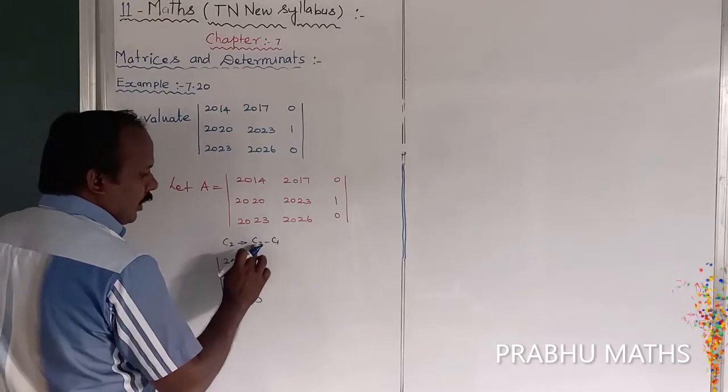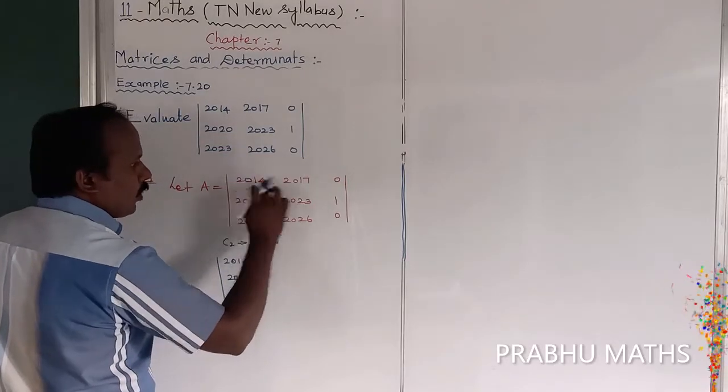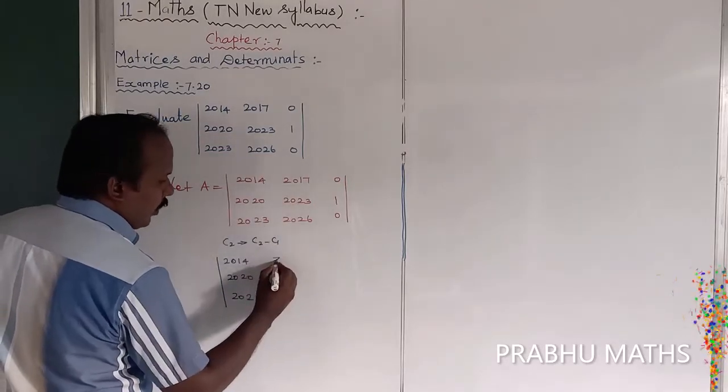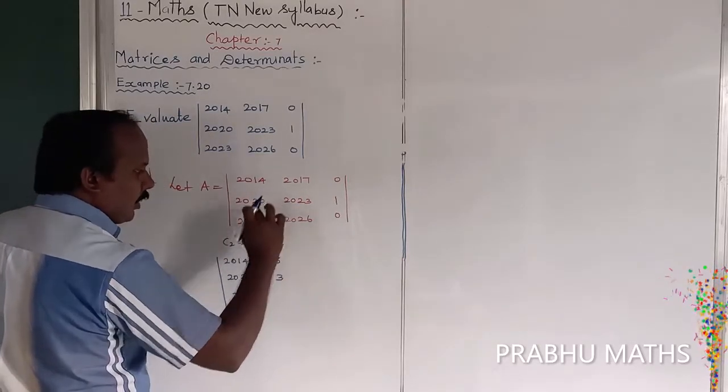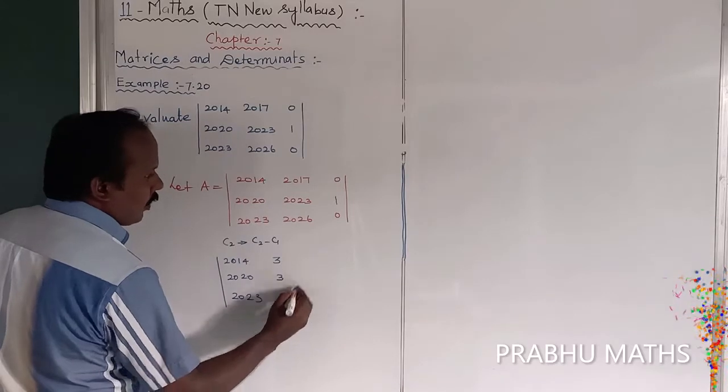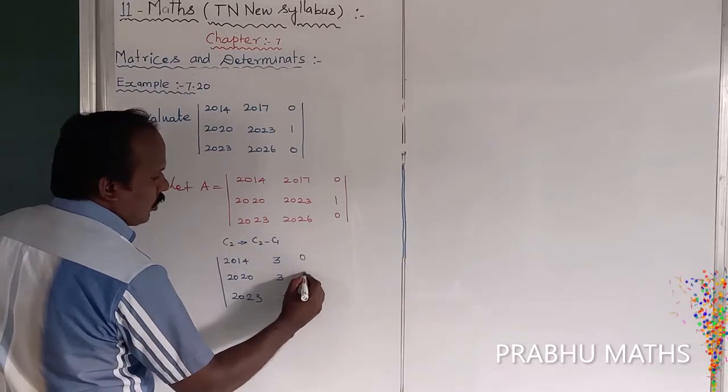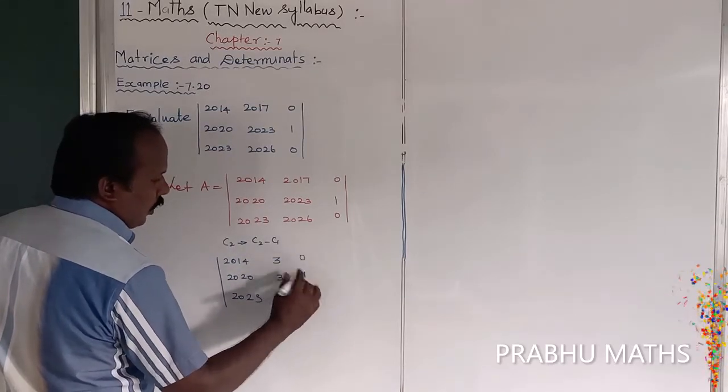So C2 should be C2 minus C1. So here minus 1, 3; next to here minus 1, 3. Remaining there is no changes: 1, 0, 0, 1, 0. Okay.